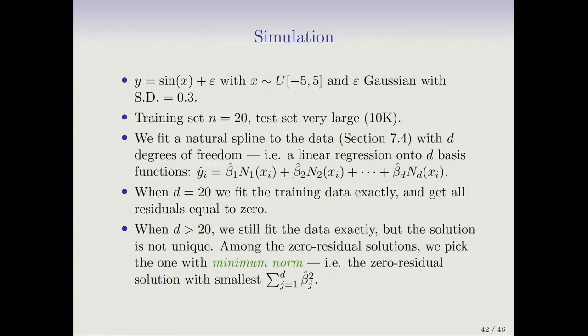This is very simple. We're going to generate data from a sine curve, where the feature X is uniformly distributed on minus five to five, and the error is Gaussian with standard deviation 0.3. We have a small training set of size 20 and a very large test set. When doing a simulation, make the test set really large — you want to find out exactly what the test error is. We're going to fit a natural spline to the data; if you've forgotten about natural splines, these are in section 7.4 of the book.